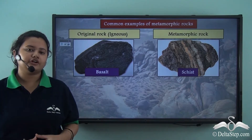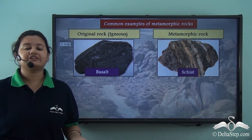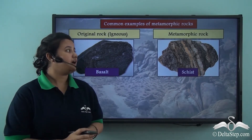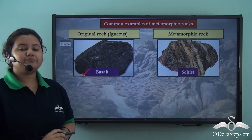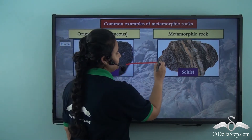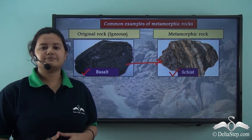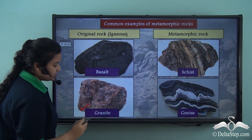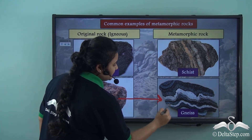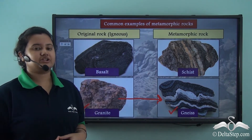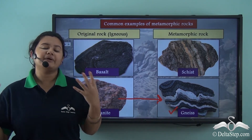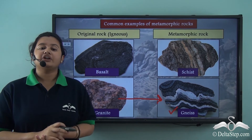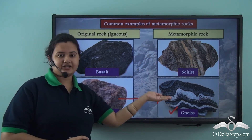Apart from sedimentary rock, igneous rock also gets converted to metamorphic rock due to heat and pressure. For example, basalt, which is a type of igneous rock, gets converted to schist, which is a type of metamorphic rock. Another igneous rock, granite, changes to gneiss due to heat and pressure. Under heat and pressure, the original rock gets metamorphosed and forms a new rock with different colour and texture — these newly formed rocks are called metamorphic rocks.